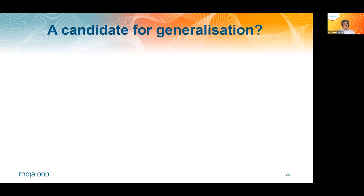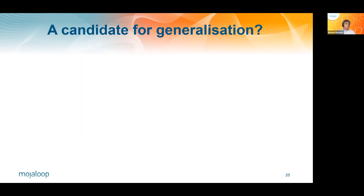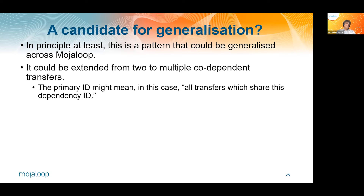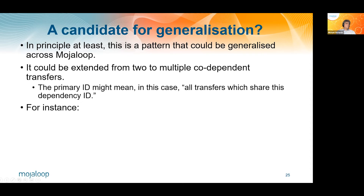We can already see that this dependent transfer model is enabling us to solve problems beyond the simple question of how to manage the difference between currency conversion and the actual transfer. This is potentially a candidate for generalization — a pattern that could be generalized across MojaLoop. It could be extended from two to multiple codependent transfers so that, for instance, the primary ID might mean all transfer requests which share this dependency ID. For example, where a bulk transfer is composed into multiple per-DFSP bulk transfers, the dependency model could be used to allow the overall bulk transfer to fail if any of the component bulk transfers fail.